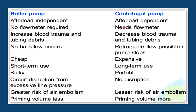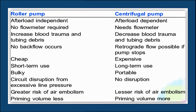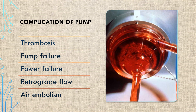The centrifuge pump is afterload dependent, so a flow meter is needed. Retrograde flow will occur if the pump stops, as it is a non-occlusive pump. It is intended for long-term use and is portable, but expensive.